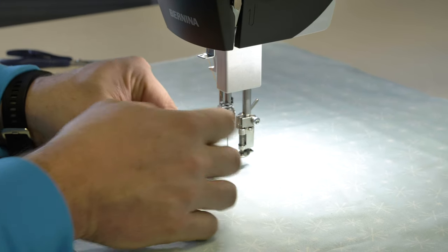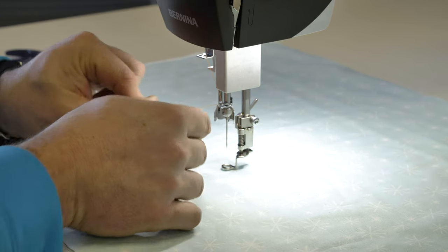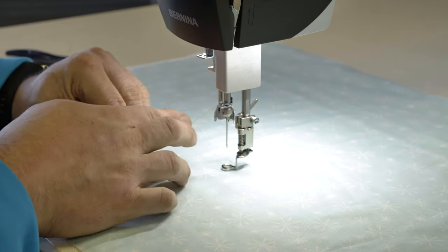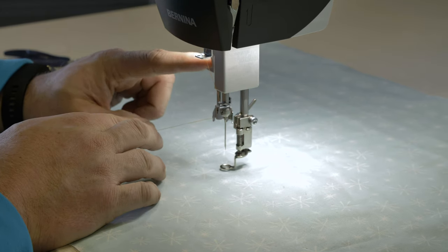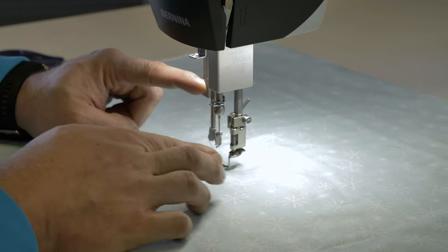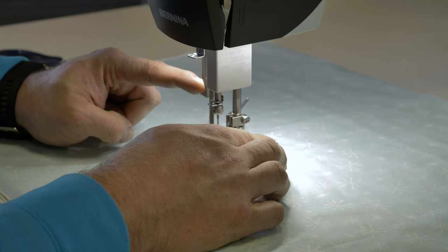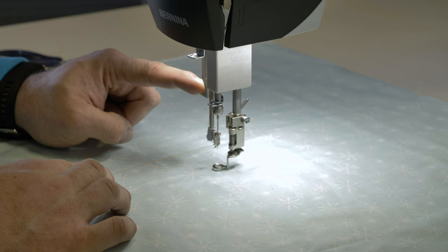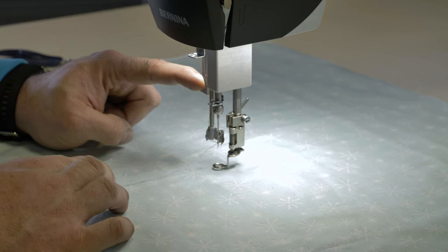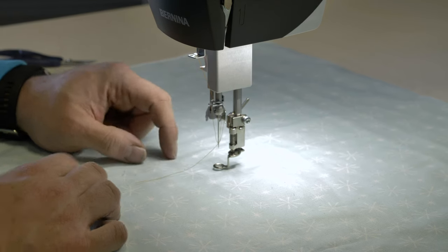We can put our foot down and we're going to use our needle threader. We're going to come across the back, push all the way down, pull it into the groove, come back towards you. You're not holding it, you're just giving it slack. It's going to pull your loop up through to the top.